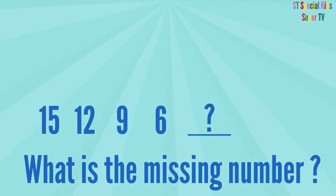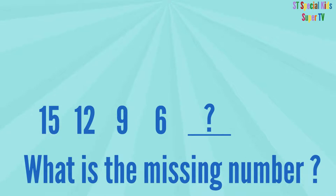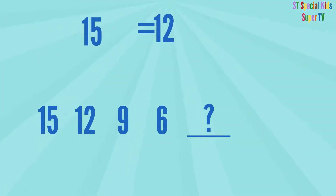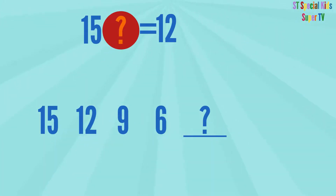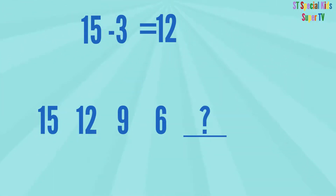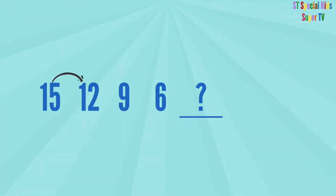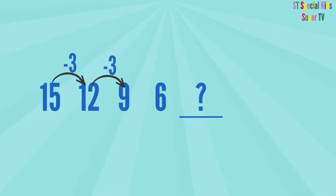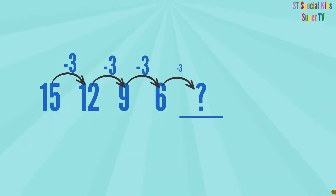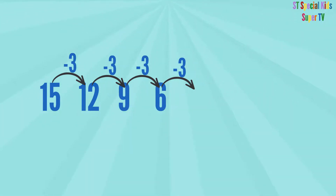This is another pattern — what is the missing number? What will you do with 15 to have 12? 15 minus 3 equals 12. And 12 minus 3 equals 9. So: 15 minus 3 equals 12, 12 minus 3 equals 9, 9 minus 3 equals 6. And what is 6 minus 3? The missing number is 3.